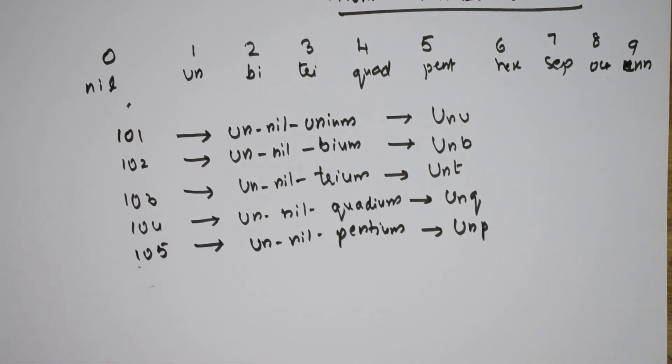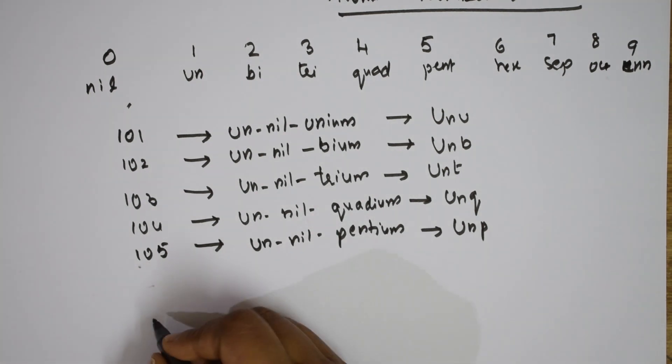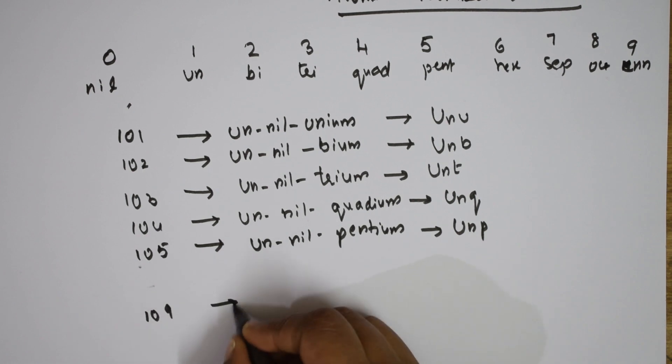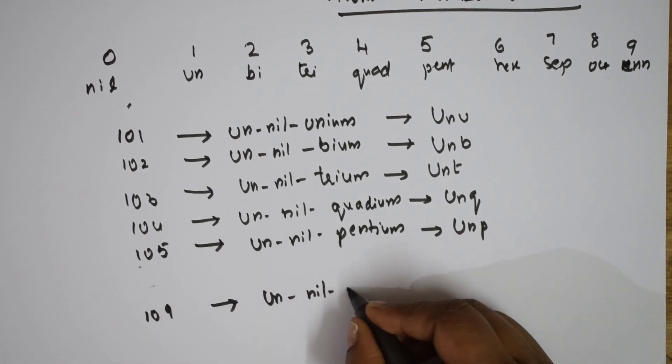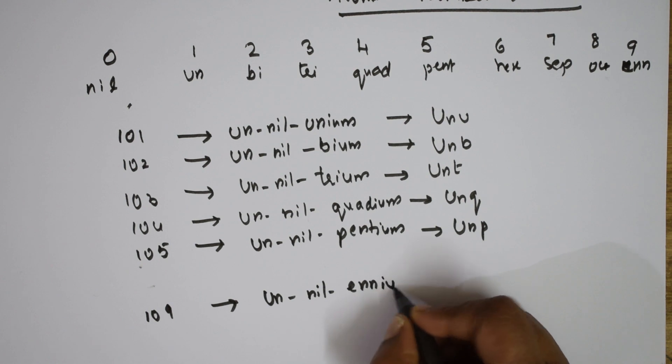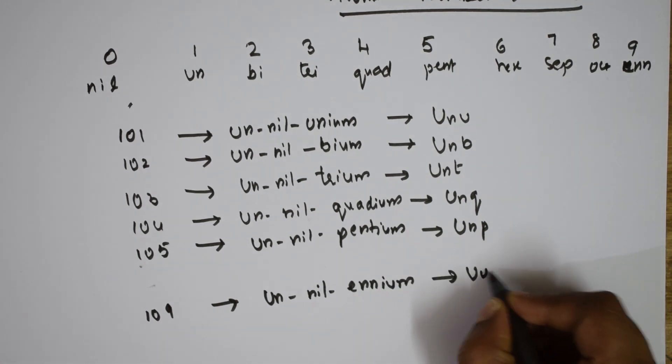Let us name 106: un-nil-hexium, symbol Unh. For 107: un-nil-septium, Uns. 108: un-nil-octium, Uno. For 109: un-nil-enium. 109 is un-nil-enium, symbol Uue.